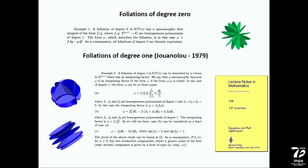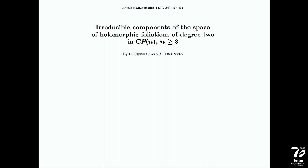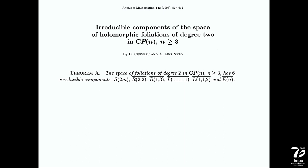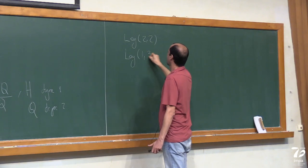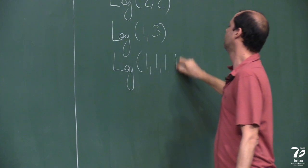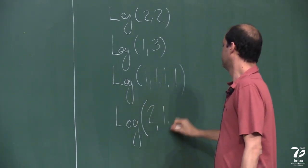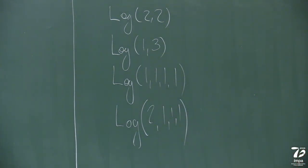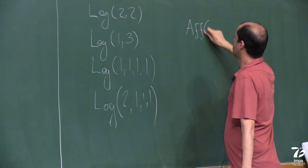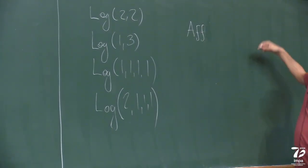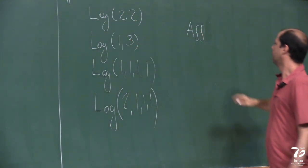The more interesting case is degree two. In 1996 a paper by Cerveau and Lins Neto appeared showing there are exactly six irreducible components. Four of them are logarithmic: log(2,2), log(1,3), log(1,1,1,1), and log(2,1,1,1). Then there are two extra components. One is the exceptional component F — which appears in Dulac's list and as Lubomir explained should be log(2,3), but cancellations occur and the degree drops. So it belongs to or is contained in the closure of log(2,3). This is the complete list of six components.